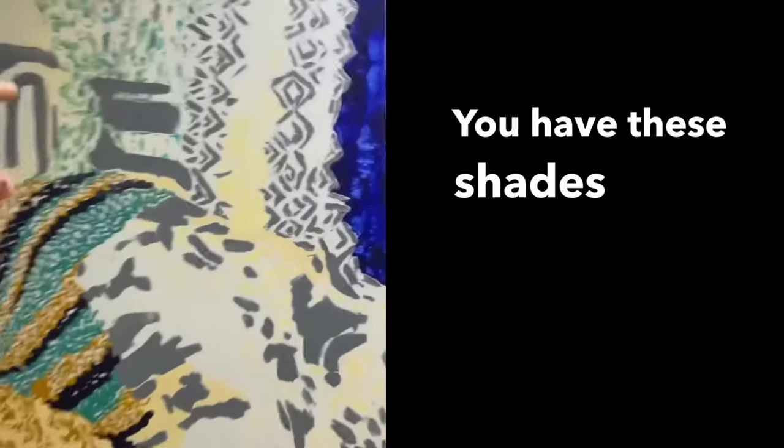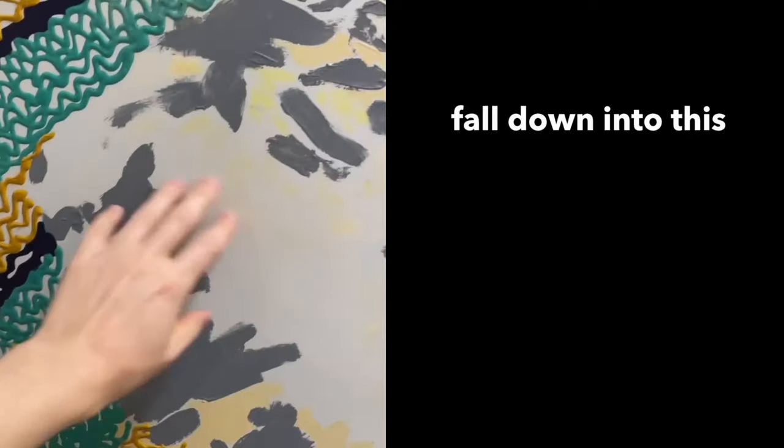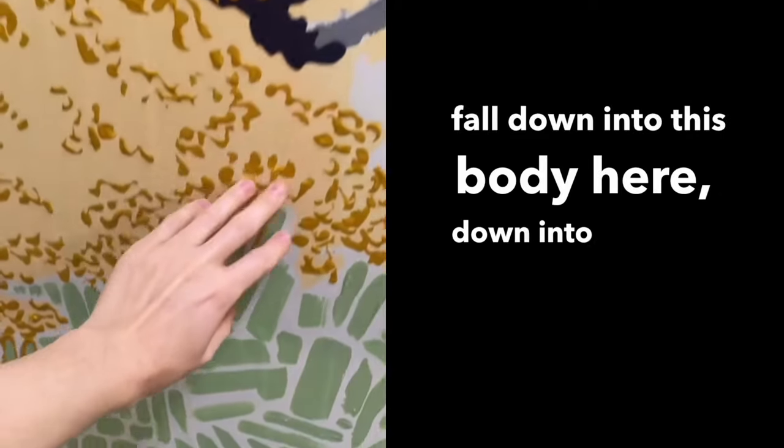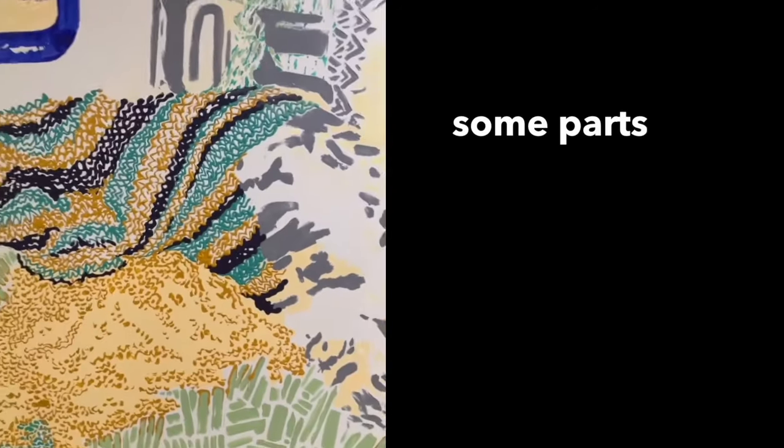It's kind of square when everything else is very organic. You have these shades here, these curtains that sort of fall down into this body here, down into the floor. There are some parts that are really off.